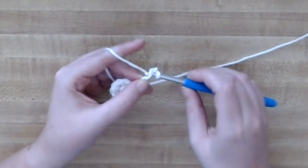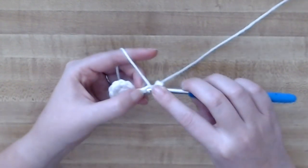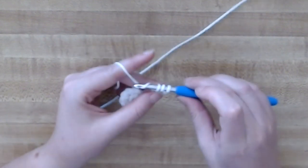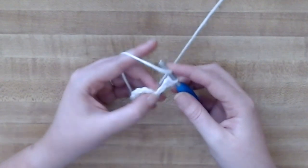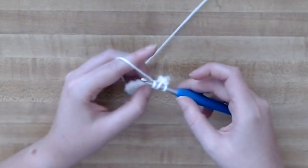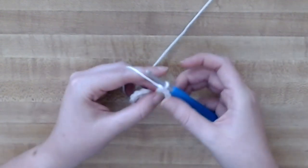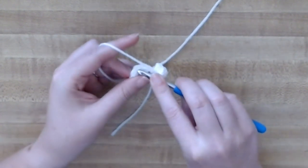And then in the next chain do a half double crochet, which is where you yarn over, put in your hook and pull up yarn, yarn over and go through all three loops. In the next chain do a double crochet. Skip one stitch and slip stitch into the next one. That's your first point made.